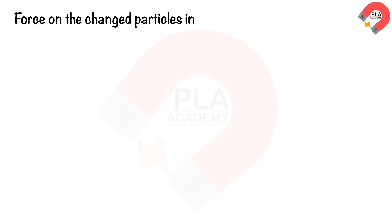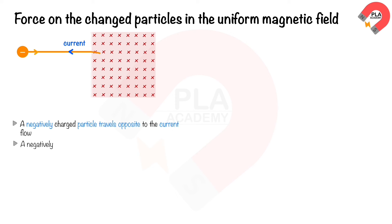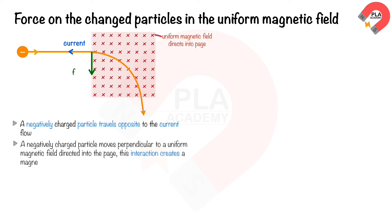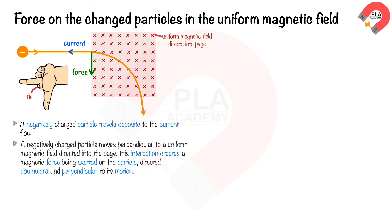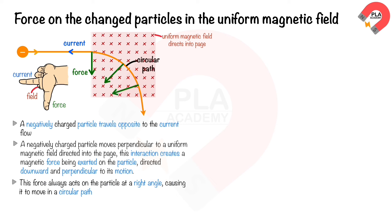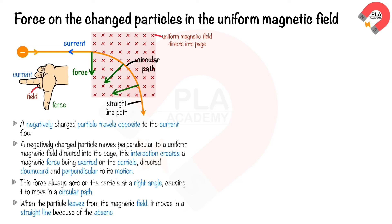Force on moving charged particles in a magnetic field: when a negatively charged particle travels opposite to the current flow, interacting perpendicularly with a uniform magnetic field directed into the page, a magnetic force is exerted on the particle directed downward and perpendicular to its motion. Applying the Fleming left-hand rule — index finger into the page, middle finger pointing left — the thumb points downward, indicating the force direction. This force acts at a right angle, causing the particle to move in a circular path. When it leaves the field, it moves in a straight line.